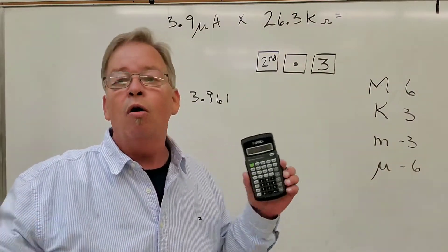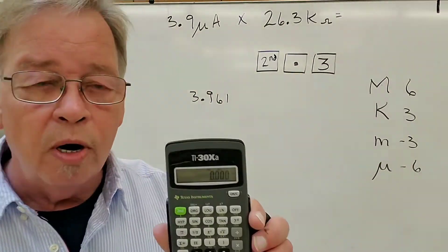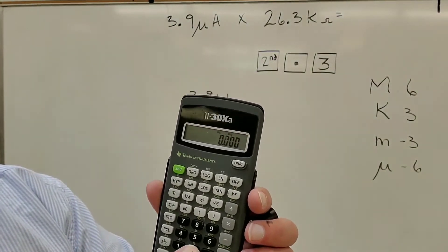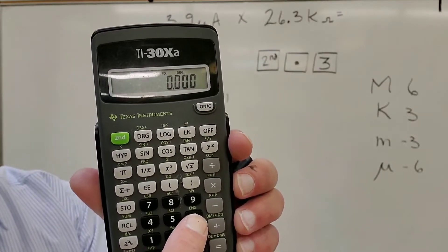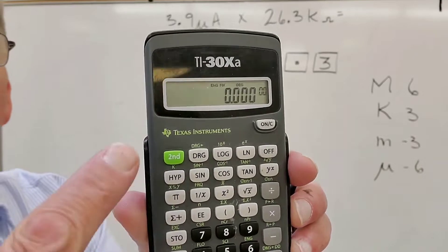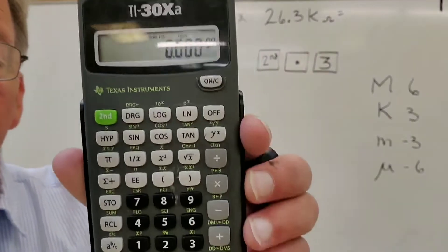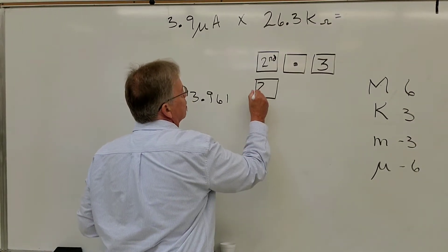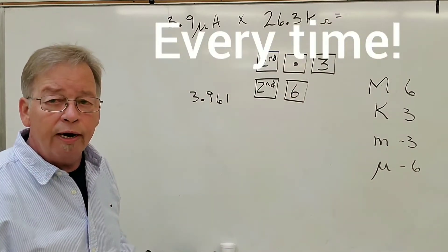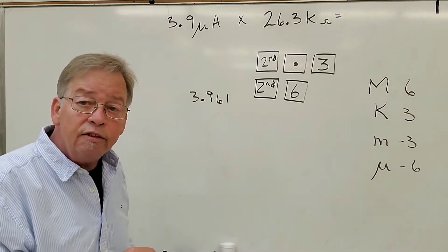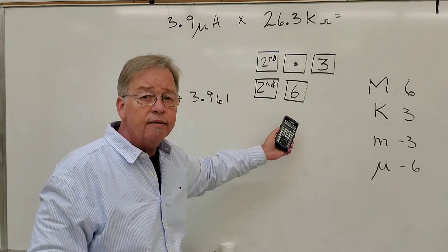I also want the calculator to automatically convert answers into the correct metric. Above the six key is the engineering notation mode — that's what I want, not the SCI above the five key. To put it in engineering mode, hit the second key and then the six key. Notice you get your zeros behind the number for the exponents — that's where the exponents are going to go. So every time I pull out this calculator, I need to set it to round three places and put it in engineering mode: second, decimal point, three — then second, six.